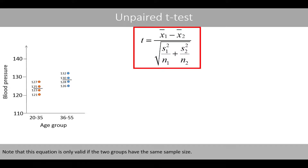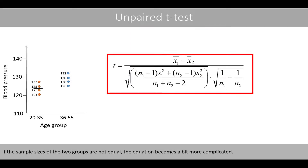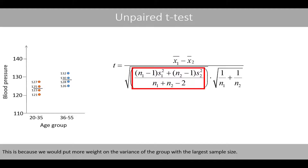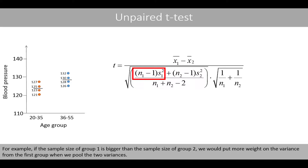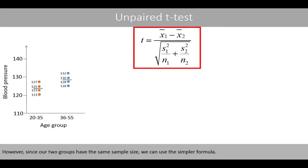Note that this equation is only valid if the two groups have the same sample size. If the sample sizes of the two groups are not equal, the equation becomes a bit more complicated, because we put more weight on the variance of the group with the largest sample size. For example, if the sample size of group 1 is bigger than the sample size of group 2, we would put more weight on the variance from the first group when pooling the two variances. Since our two groups have the same sample size, we can use the simpler formula.